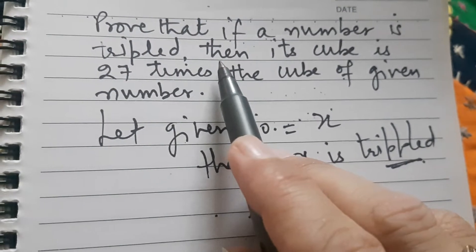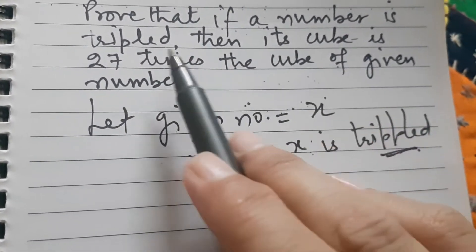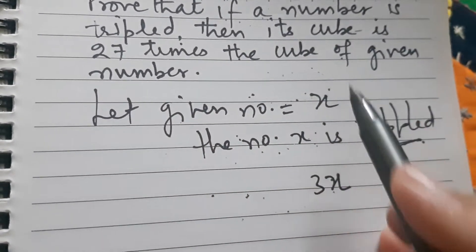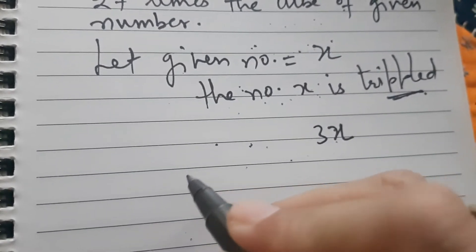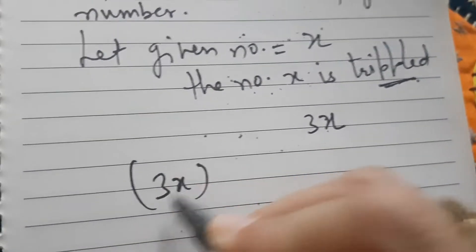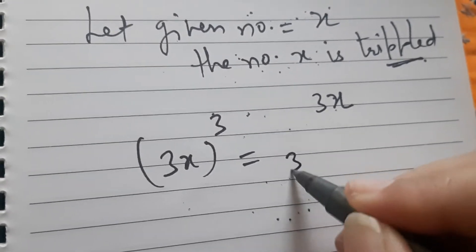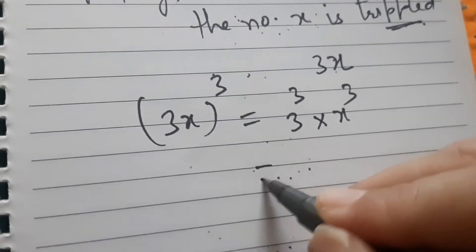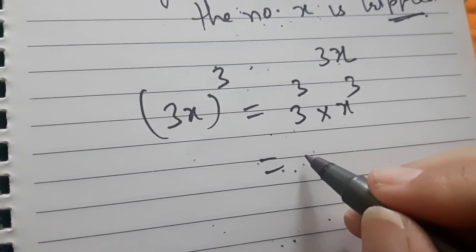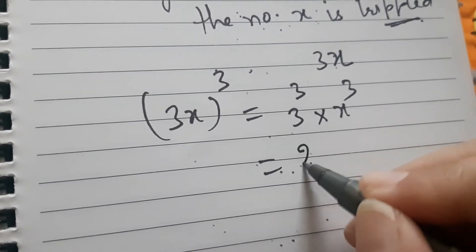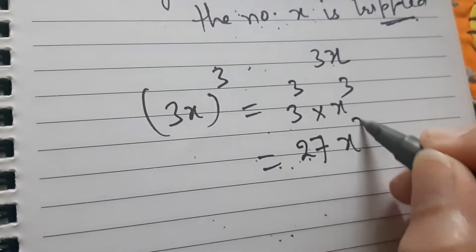Now the question is, prove that if a number is tripled, then its cubes. So when it is tripled, we have to find the cube of 3x. So what will be 3x cube? It is 3 cube into x cube. So what is 3 cube? 3 into 3 into 3. That is 27x cube.